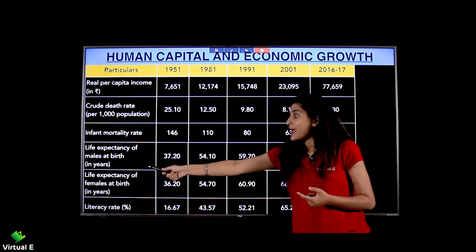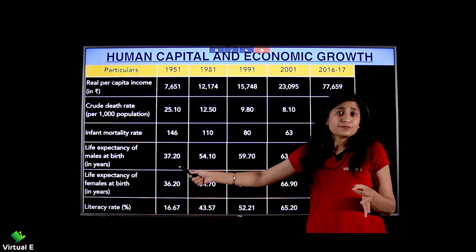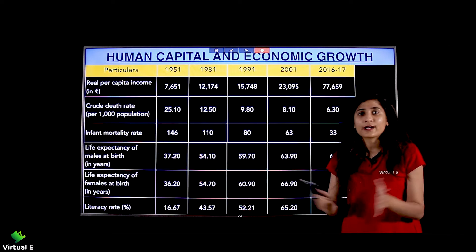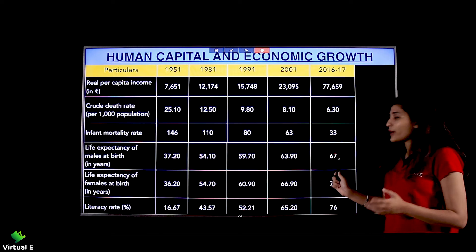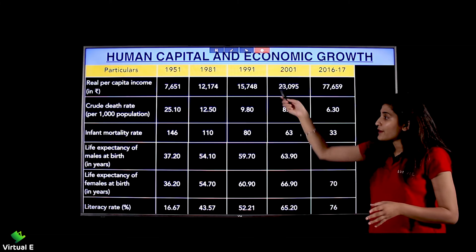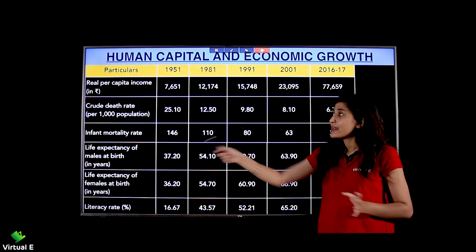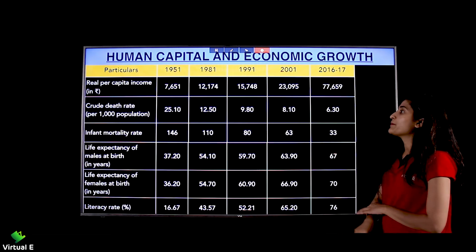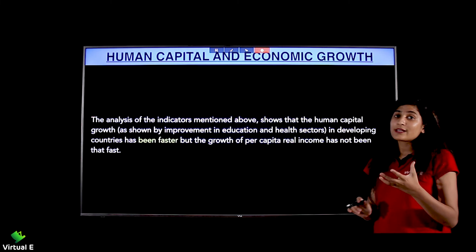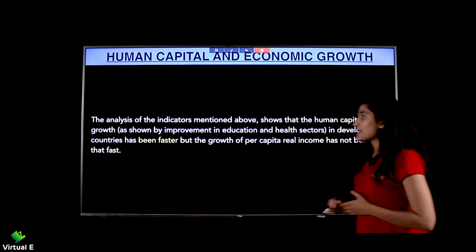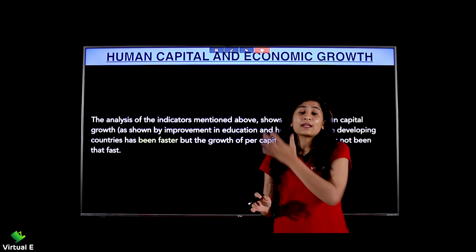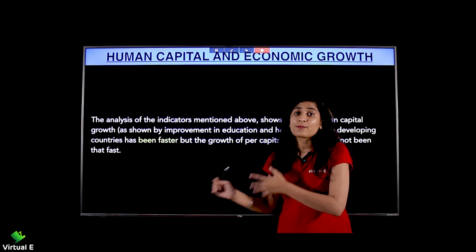Life expectancy for males was 37.20 years in 1951 — when there were no medical facilities, famines, and droughts — and improved to 67 years. For females, life expectancy was 36.20 and improved to 70 years. In every sector there has been development. The analysis of these indicators shows that human capital growth, as shown by improvement in education and health sectors, has been faster, but the growth of per capita real income has not been equally fast.